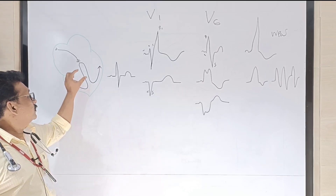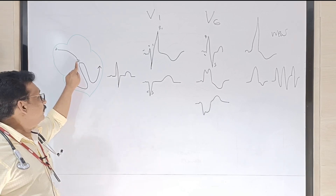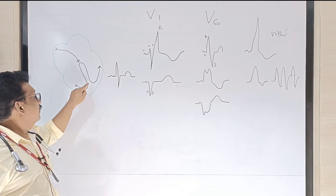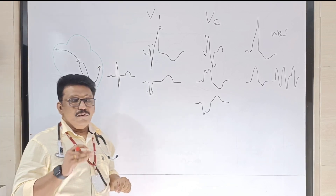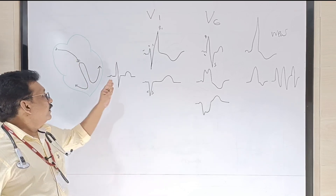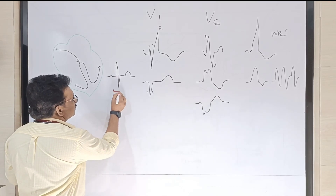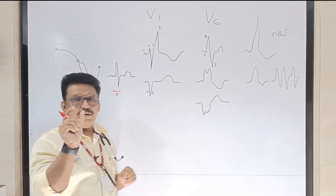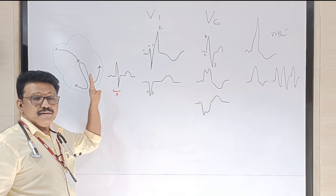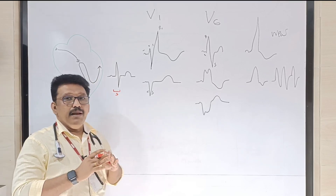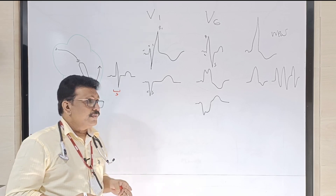The QRS complex is produced by the activation of the ventricle. From the SA node, current comes to the AV node, and from the AV node it goes to the ventricle, where you have the right bundle and left bundle. When it goes through a normal pathway, the QRS complex will be narrow — less than three small divisions. When there is a problem in the conduction pathway in the ventricle, it may become wide, more than three small squares.